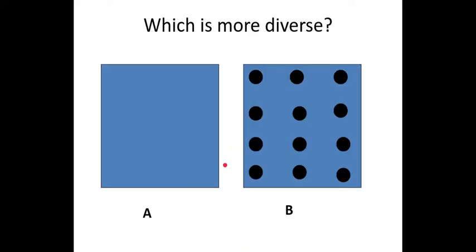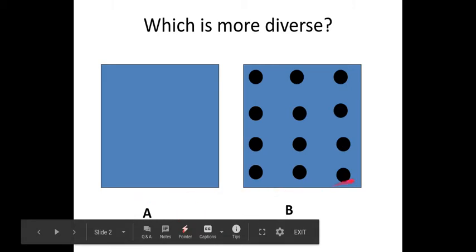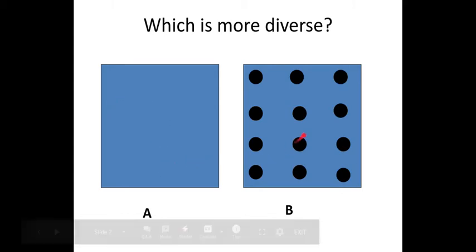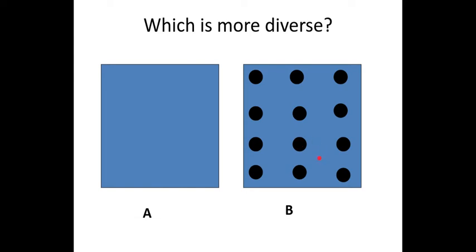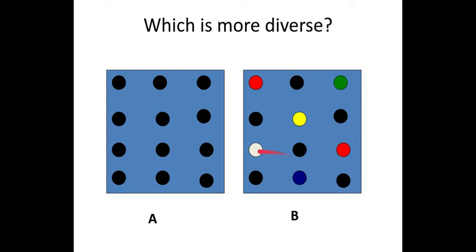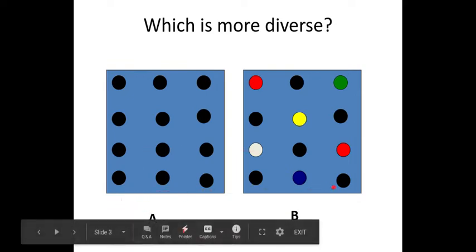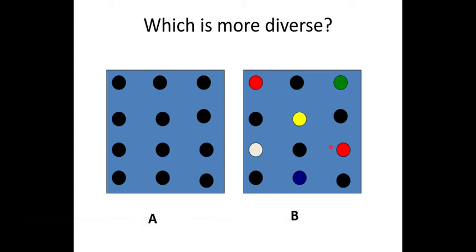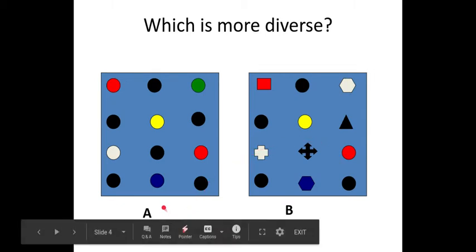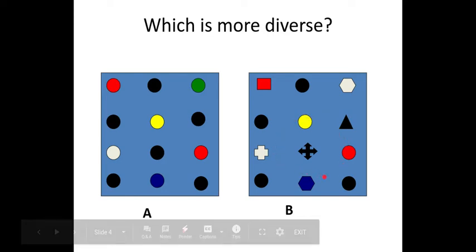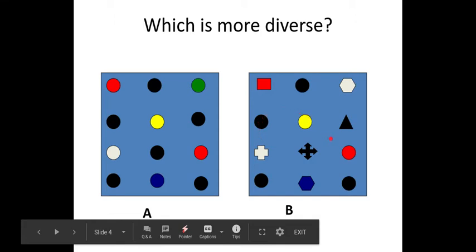Looking at these two pictures, we have two squares here, A and B. The question is which one's more diverse. In A, there's only one option — only blue stuff. In B, there are circles as well as the blue space. So B is going to be more diverse. Similarly, comparing another A and B: A has only one type of circle, while B has a number of different circles and also a diversity of colors as well as shapes.